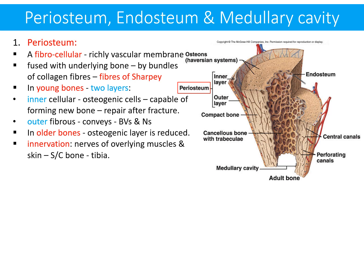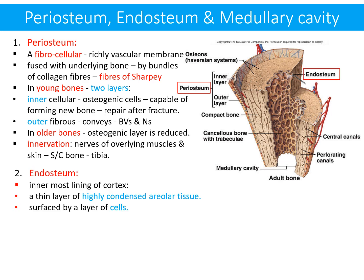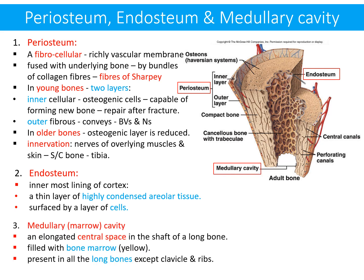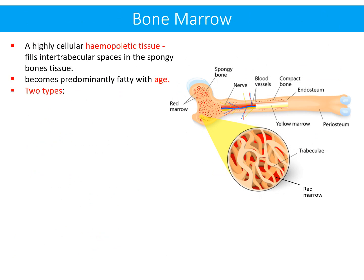When innervated by skin nerves, the periosteum becomes more sensitive — the example is the shin of the tibia. The endosteum is the innermost lining of the cortex, present as a thin layer of highly condensed areolar tissue surfaced by a layer of cells. The medullary or marrow cavity is an elongated central space in the shaft of a long bone, filled with yellow bone marrow, present in all long bones except the clavicle and ribs.